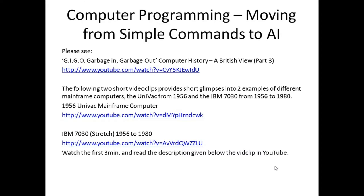There are also two other video clips to take a look at. These two short video clips provide glimpses into two examples of different mainframe computers: the UNIVAC from 1956 and the IBM 7030 from 1956 to 1980. The URLs for those video clips are given — both from YouTube. For the second one, just look at the first three minutes, as beyond that it reiterates territory already covered. Also take a look at the description given below the video clip in YouTube itself.